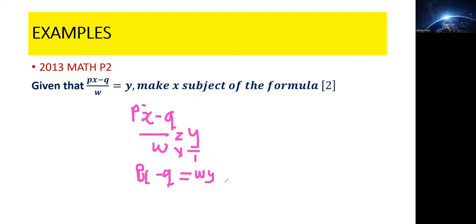So what is the next step? You get rid of the negative q term, since you want to remain with x. To get rid of it, you bring in the additive inverse of q. Now, an additive inverse is the number which, if added to another number, gives zero. For example, the additive inverse of negative one is positive one, because together they give zero. So negative q plus q gives zero.